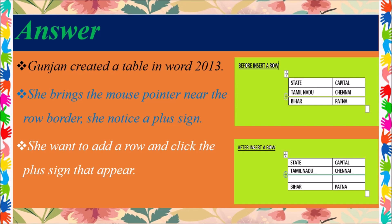We can see the before and after images — before inserting the row and after inserting one row, the images look different. The plus sign's purpose is that when you press the plus sign, one more row will be inserted into your table.